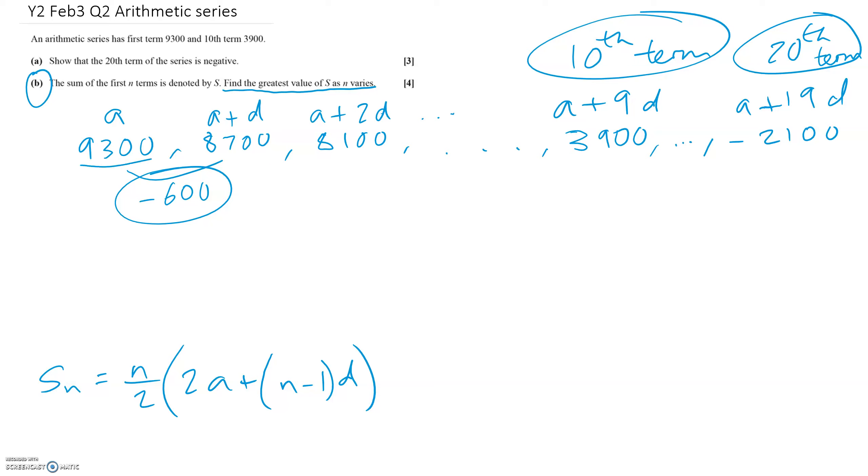So if we keep adding on positive terms, then the value of s is going to get bigger and bigger. But as soon as we start adding on negative terms, obviously the sum is going to start to decrease. So if we can find at what point the terms first become negative, then we'll be able to just add up the positive terms.